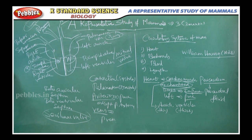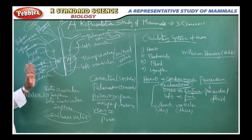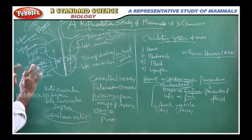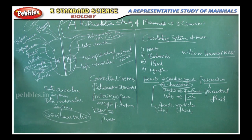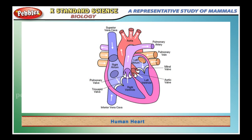The deoxygenated blood mostly contains carbon dioxide, so from the heart the blood is taken back to the lungs for purification. This is the structural function of the heart. You can observe this diagram in the slide.